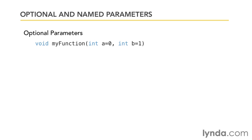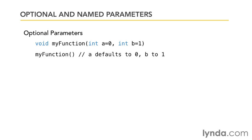The way that you do that looks like this. You define the function normally with two integer parameters, but you add equals and then values after each one of those parameters. So for my function, I don't have to supply values for A or for B, because if I don't, then A will default to 0 and B will default to 1. It's just as valid to call the function with both defaulting, as it is to call it where A is now 10 but B retains its default value.